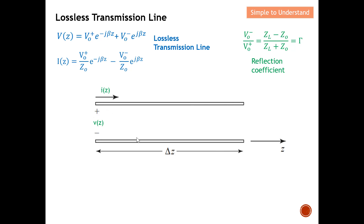In this diagram, we have a lossless transmission line, which means resistance R and conductance G are equal to zero. This set of equations represents the voltage and current at any point on the transmission line. In Part 6, I also successfully derived the equation for the reflection coefficient. In this video, I'm going to further discuss the reflection coefficient at the load and at the source to complete the transmission line theory discussion.